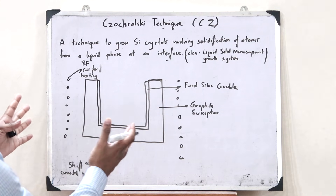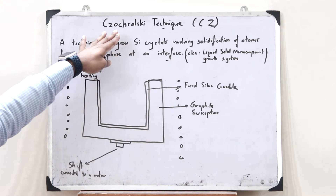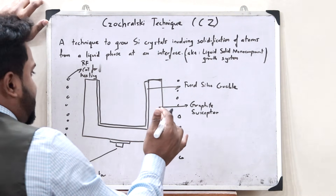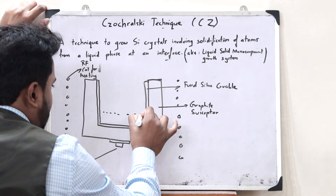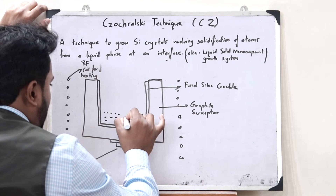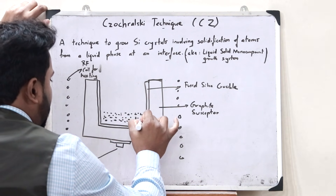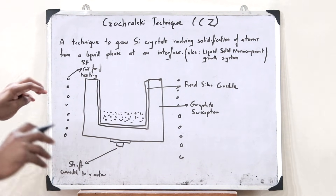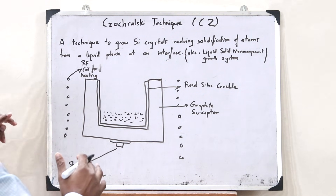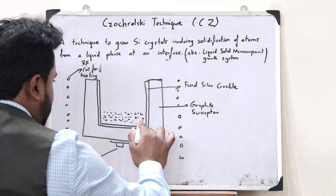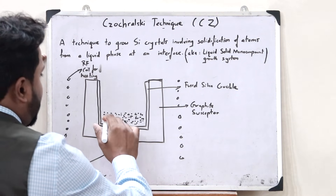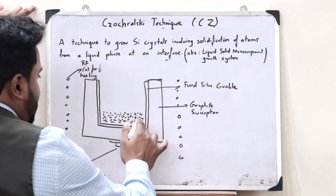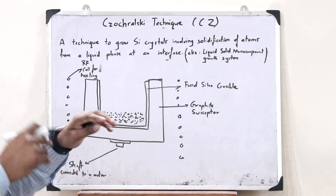This forms the entire furnace setup used for the purpose of creating silicon crystals using the Czochralski technique. What we do is take polycrystalline silicon and place it inside the crucible. After placing it there, with the help of these RF coils, we provide heat to the entire setup and heat this polycrystalline silicon. Once heat is provided, after a particular period of time, this polycrystalline silicon will start melting.